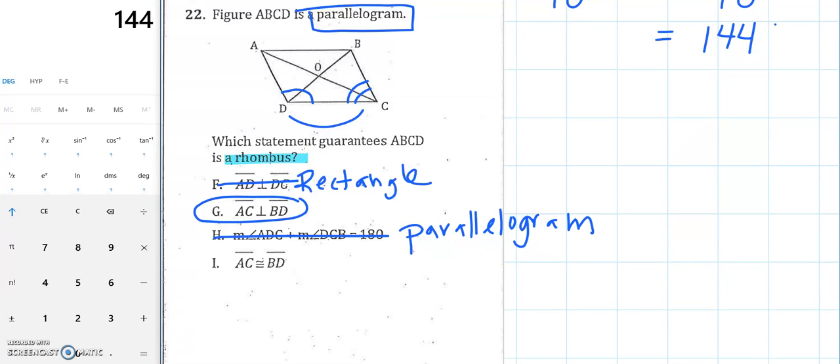And now the last choice, AC is congruent to BD. Okay, so if my diagonals are congruent, again, that's gonna prove that it's a rectangle, but that's not going to be true for your rhombus, so it's not gonna be choice I because that's a rectangle property. So I'm crossing that out, and it has to be choice G. Let's pick up from the next problem with the next video. Thank you.